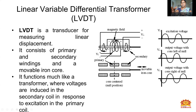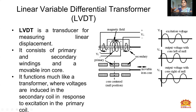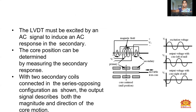When we apply the input voltage to the primary coil, a magnetic field is created, and the secondary coil produces an induced voltage. Since we are using AC current — alternating current — the output graph is a sinusoidal waveform, with VA on the time axis as the excitation voltage. The output voltage V0 with the core left of null position means the voltage is slightly displaced leftward. The output voltage with core at null position is the opposite. The LVDT must be excited by an AC signal to induce an AC response in the secondary. The core position can be determined by using the secondary response.